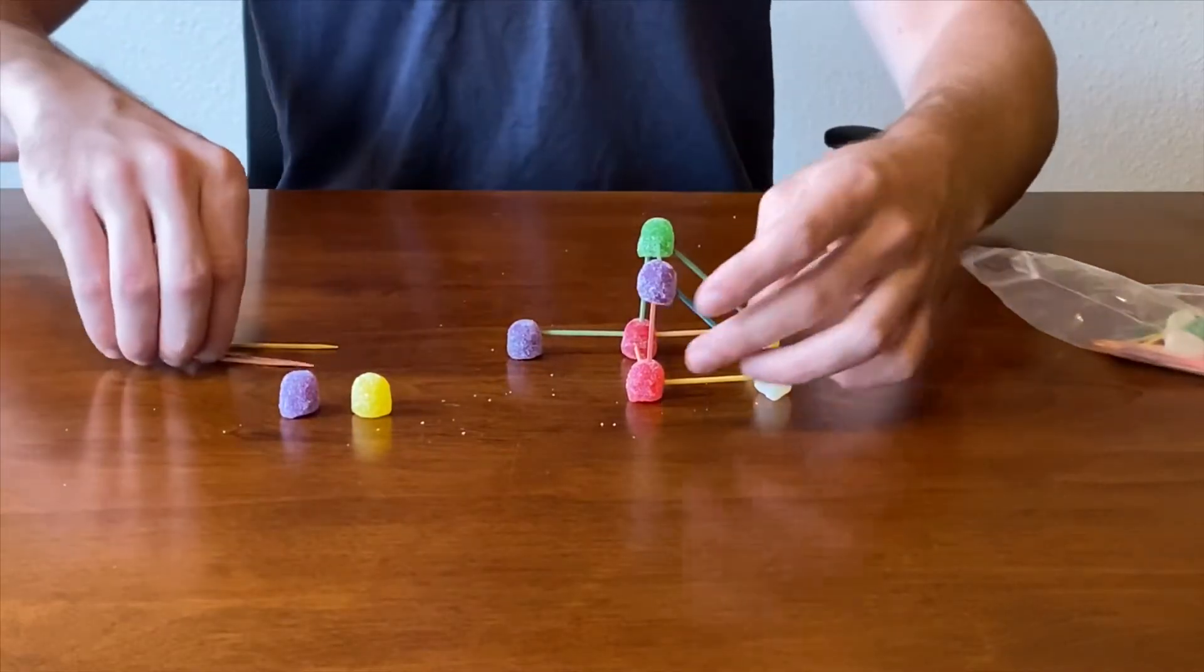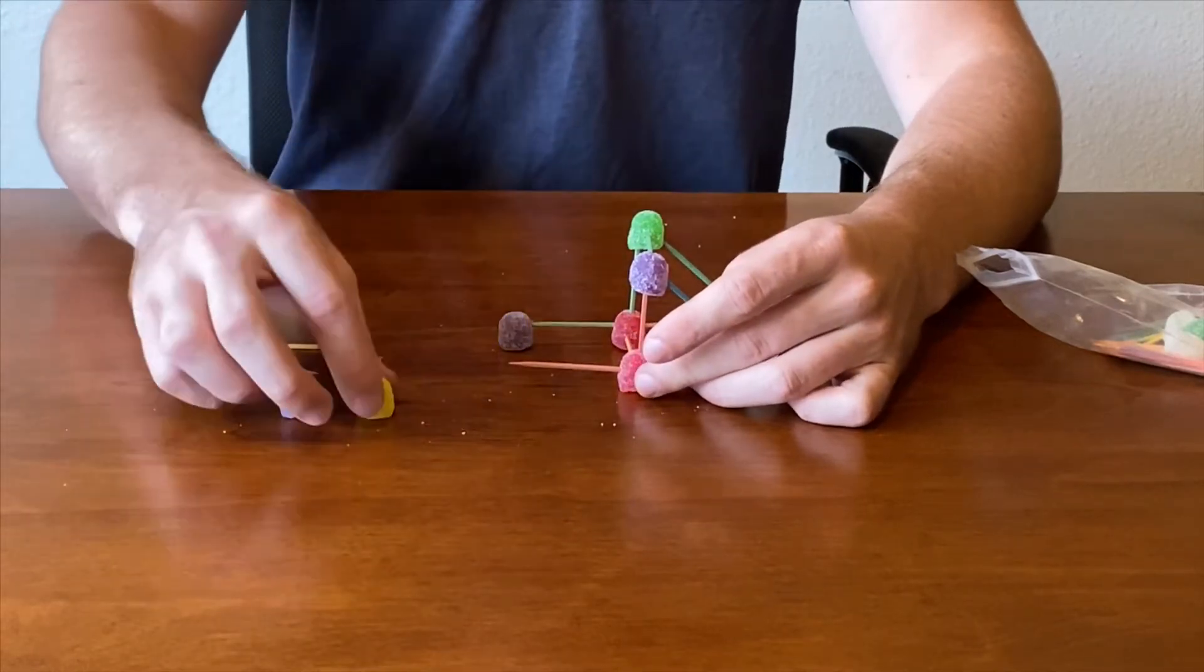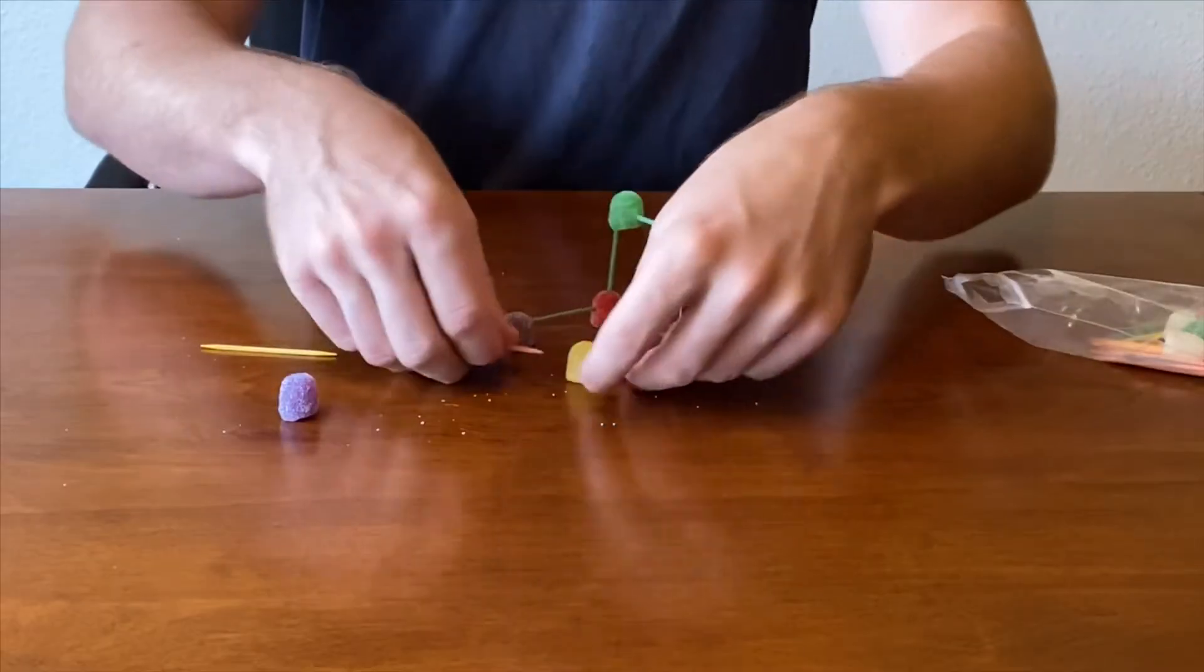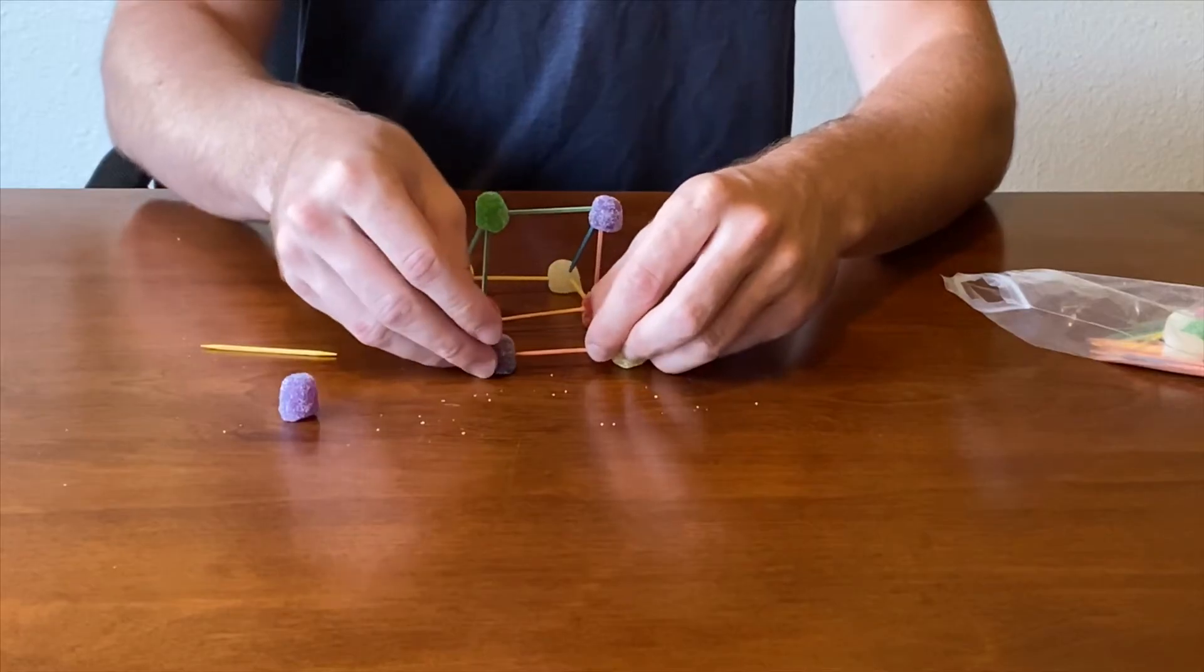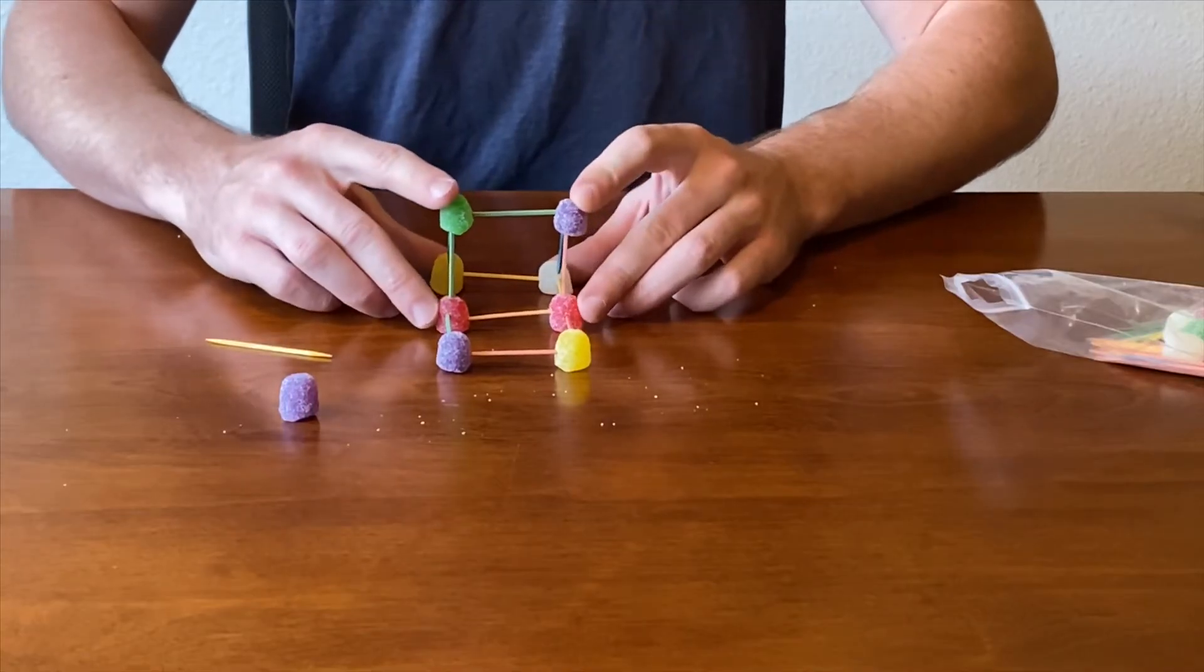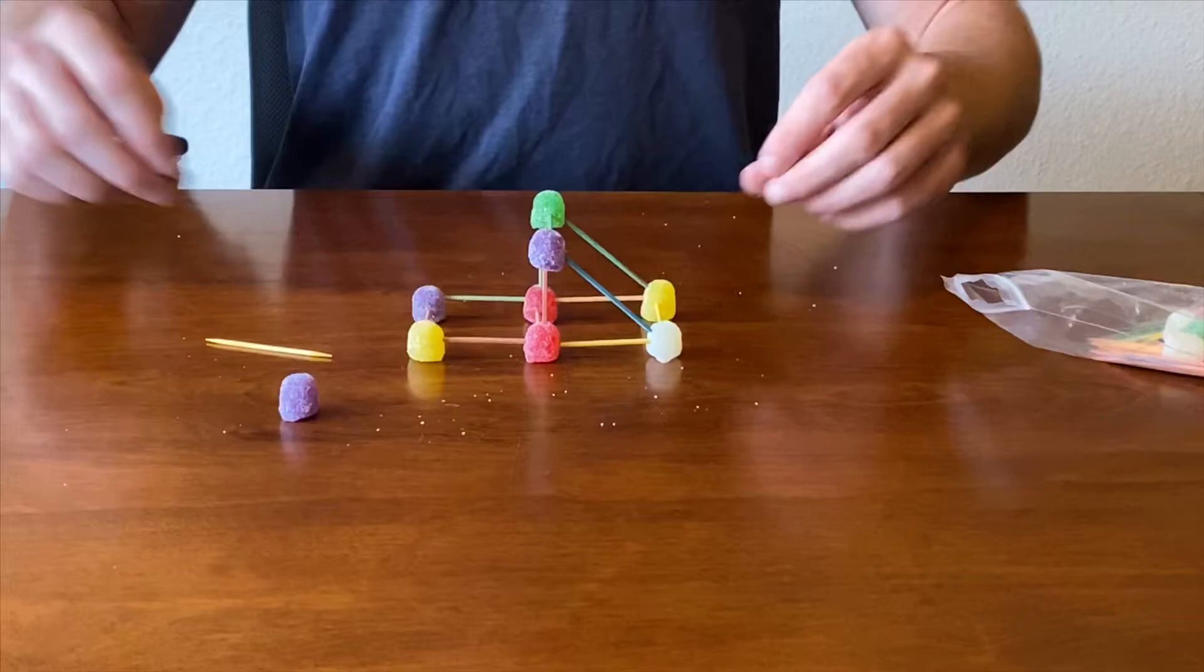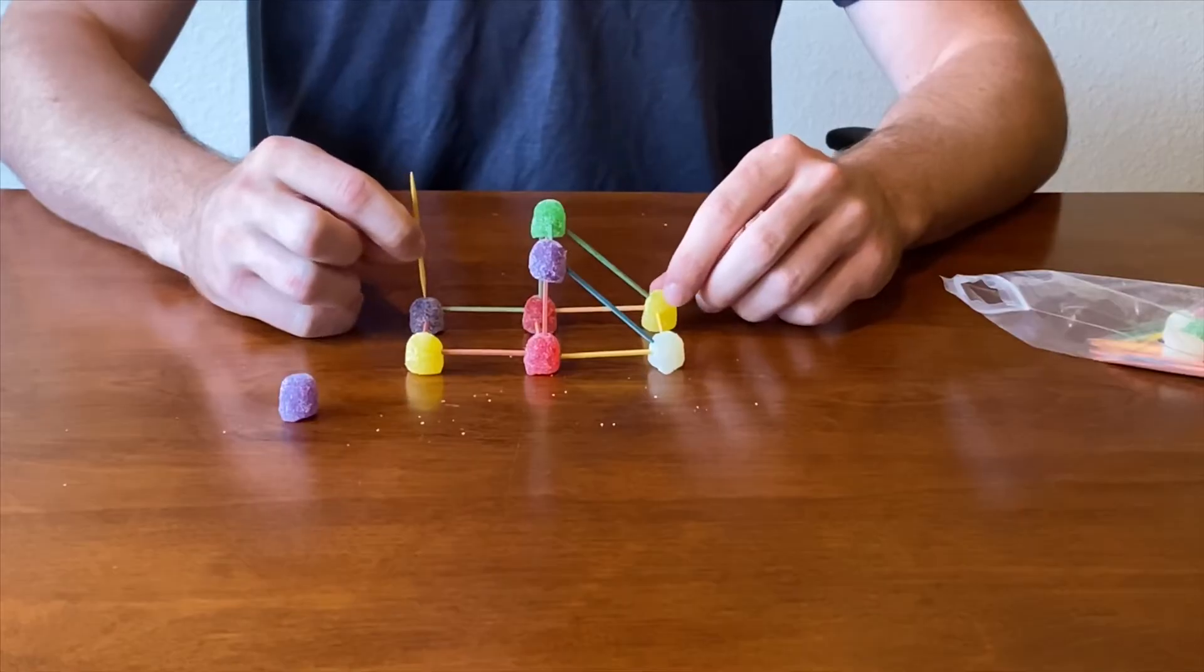From this point, connect your two gumdrops right here. You can kind of straighten it out if it's a little crooked here or there, just to get it a little more symmetrical. Just like that, the bottom of our base is done here, and now we just need to start adding upwards.